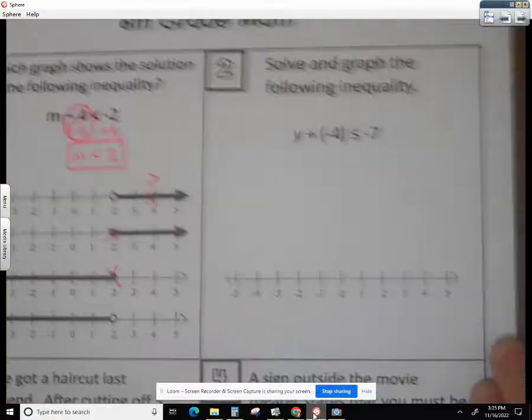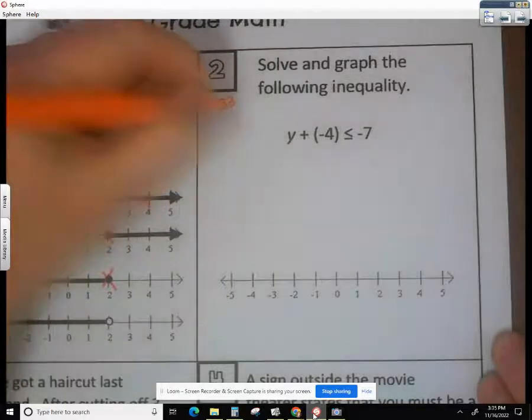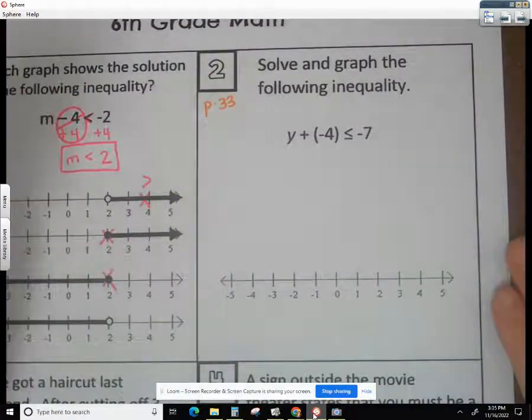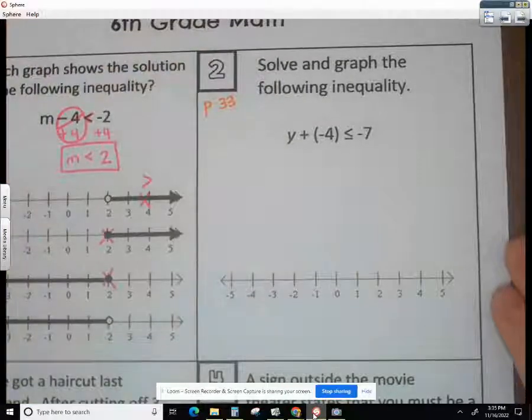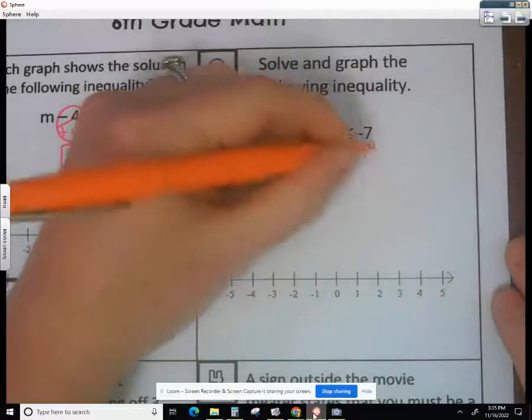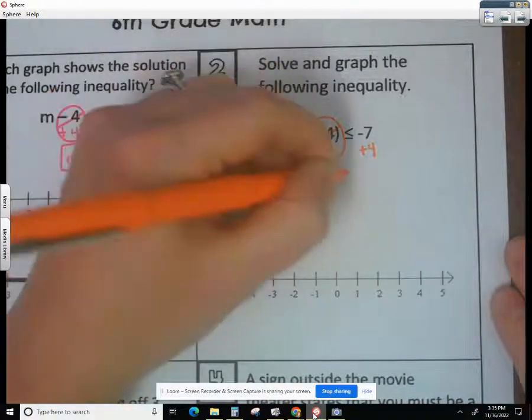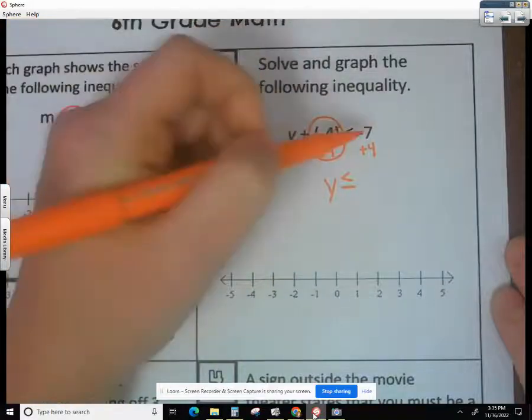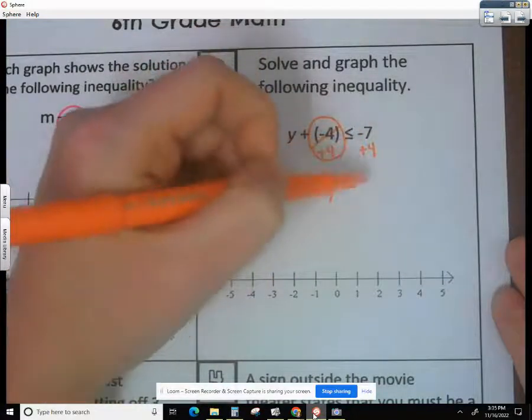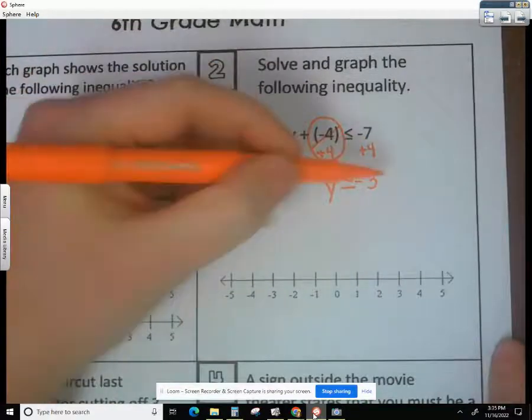Question number two is about something very similar. So this is also on page 33, because we're solving and graphing. So we want to get y by itself. We need to get rid of the negative 4, and we can cancel that out with positive 4, because that's going to be zero pairs. So that leaves us with just y is less than or equal to. Different signs we find the difference, which is 3. We have more negatives this time, so it's negative 3.